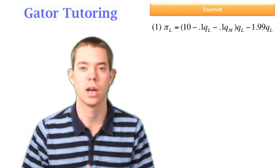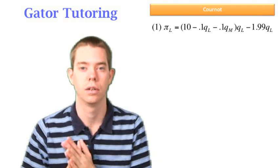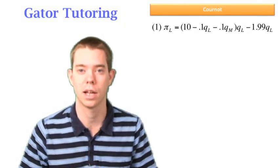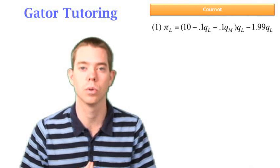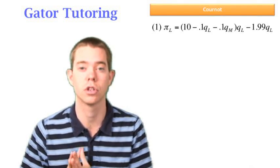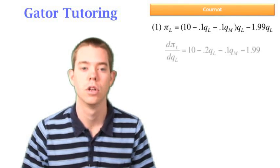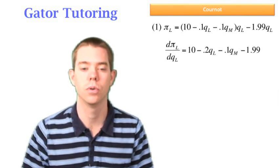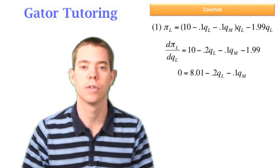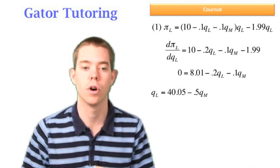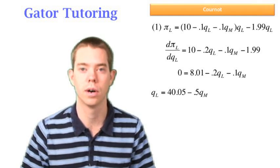So just pay attention that one person's quantity helps determine the other person's quantity. That's what the reaction function was telling us. QM equaled some function of QL, so whatever QL is, if it's changing, QM will also change. So we can take the derivative with respect to QL, set it equal to zero, and find Larry's first reaction function, which we find to be 40.05 minus 0.5QM, and that's equal to QL.